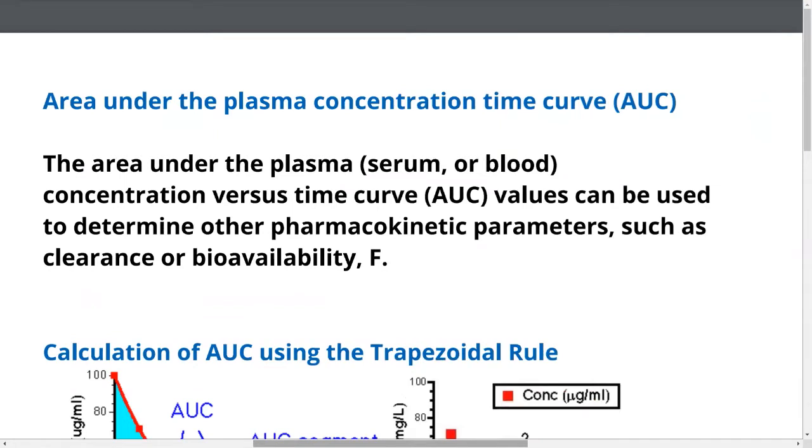Let us look into area under plasma concentration time curve or AUC. The AUC values can be used to determine other pharmacokinetic parameters such as clearance and bioavailability.